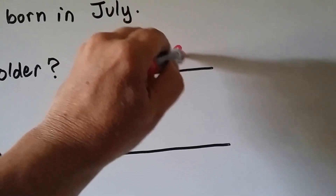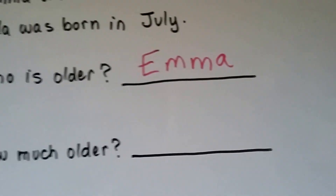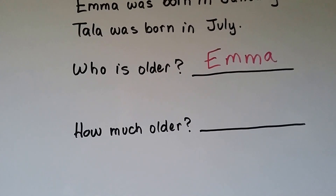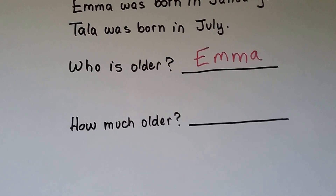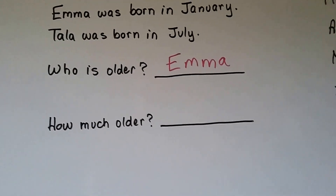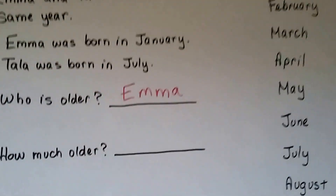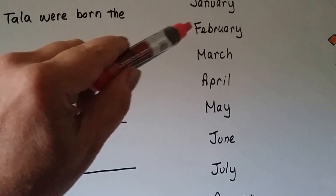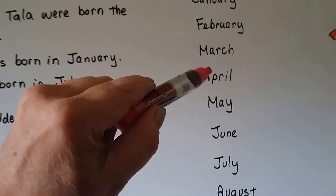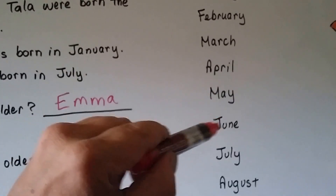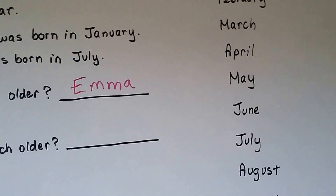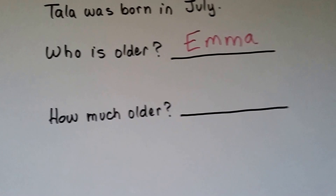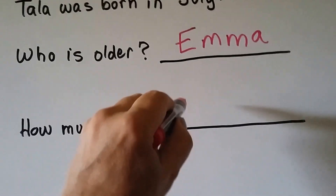How much older is Emma than Tala? We counted the months: one month, two months, three months, four months, five months, six months. She's six months older than Tala.